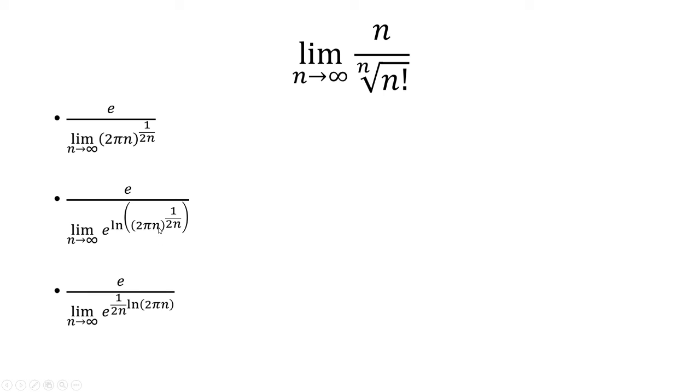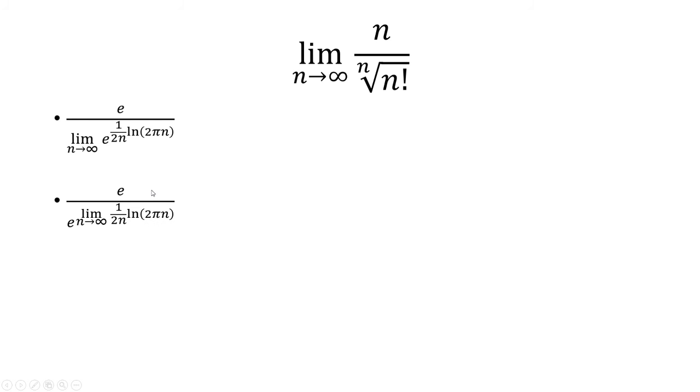Now, the natural log brings the exponent out in front. So we're going to have 1 over 2 n times ln of 2 pi n. And here I can move the e down here. So really what I'm doing is moving the limit inside the exponent. So I'm just switching spots, really.